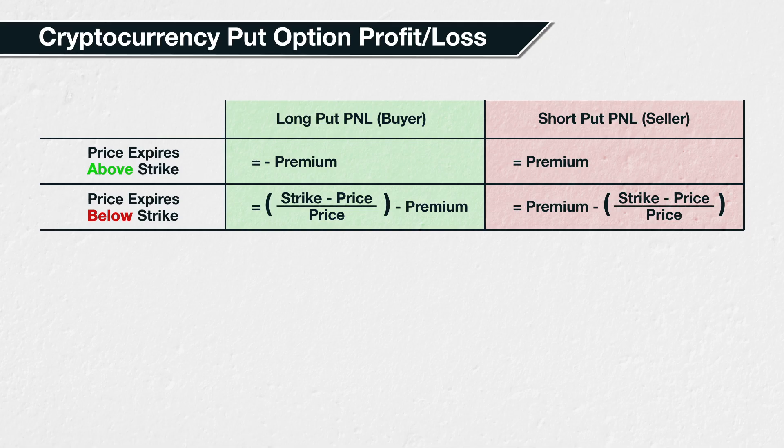This table shows how to calculate the profit or loss of a Bitcoin put option position for either the buyer or seller. To keep things simple, we've left out the position size, i.e. the number of contracts. To adjust for that, you would just multiply by the number of contracts at the end.